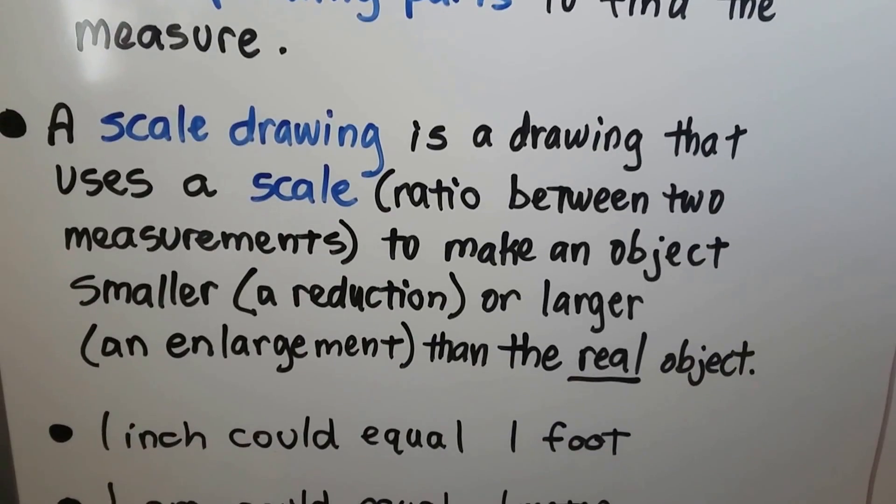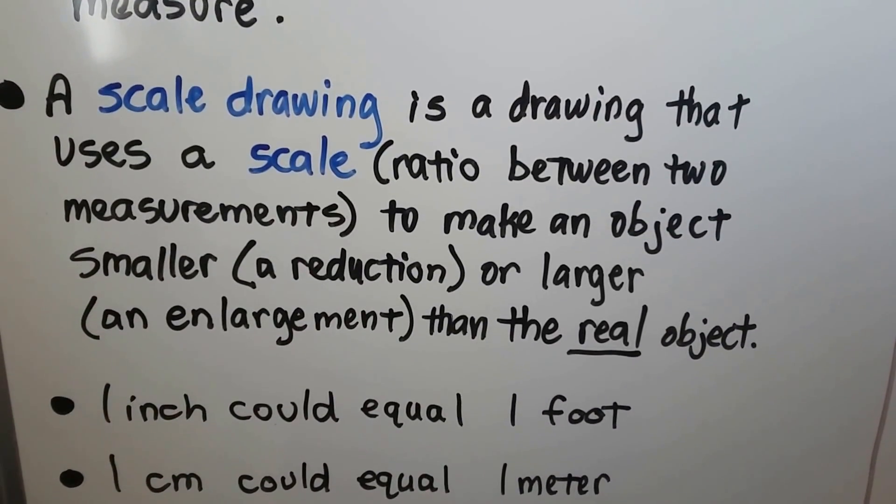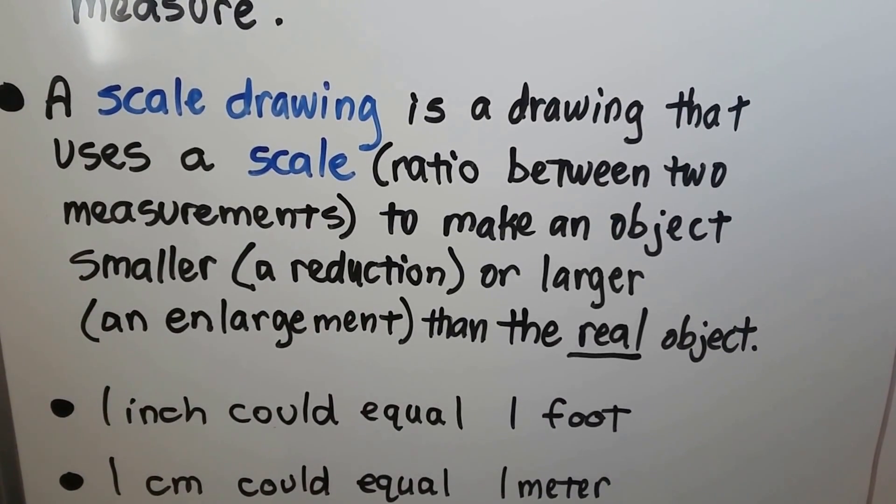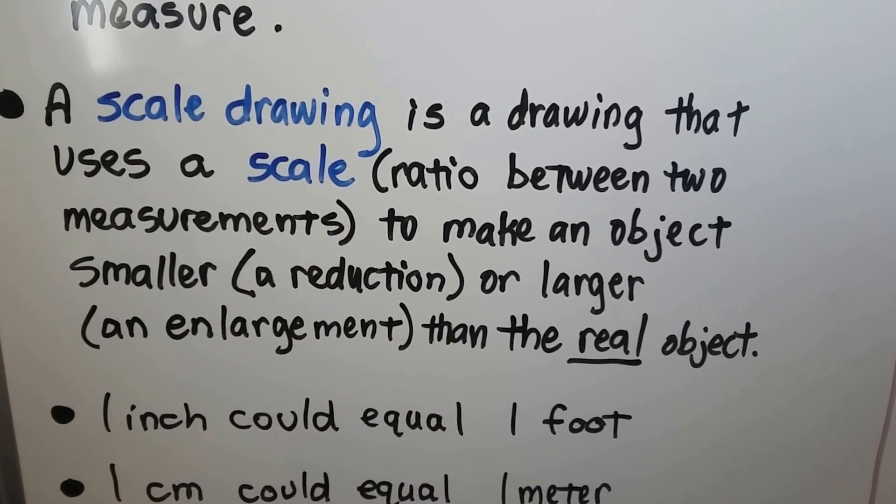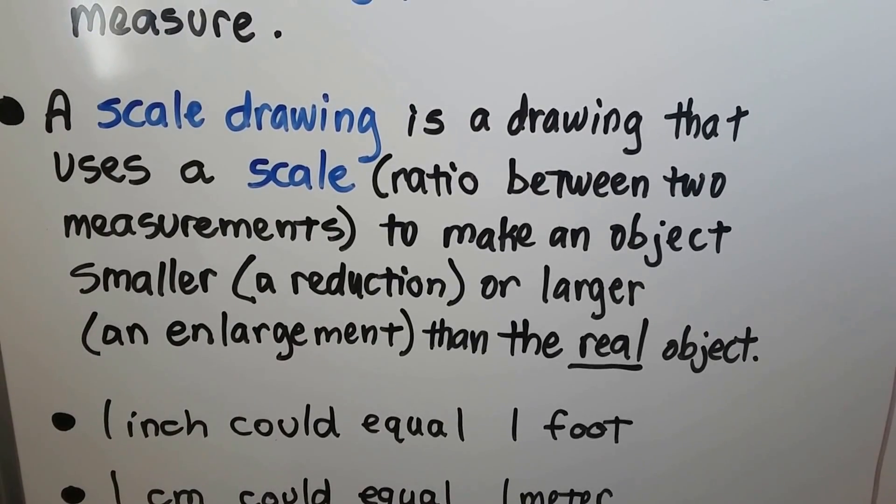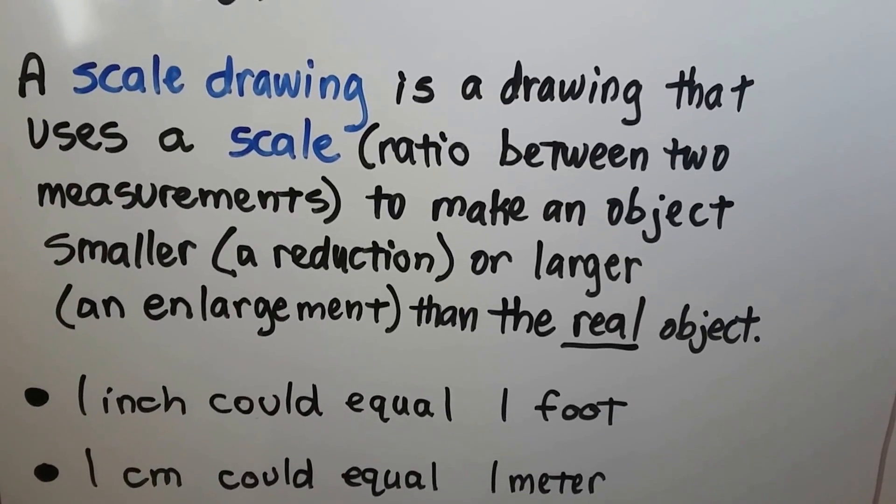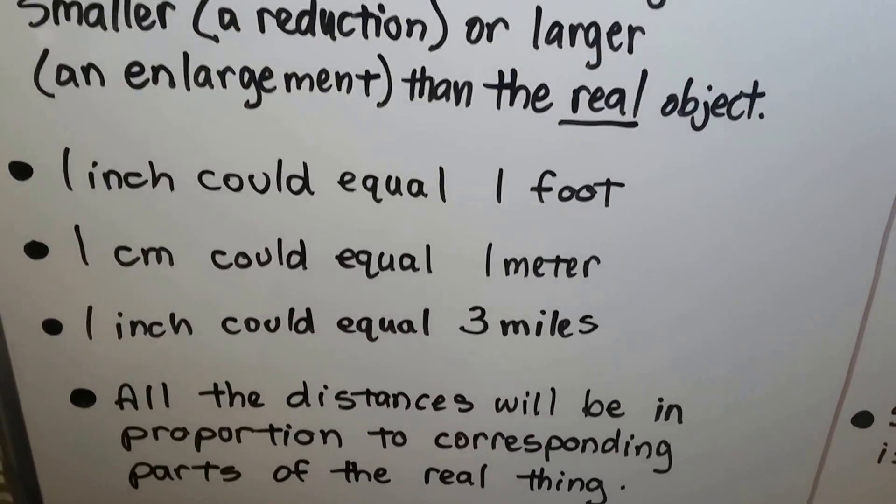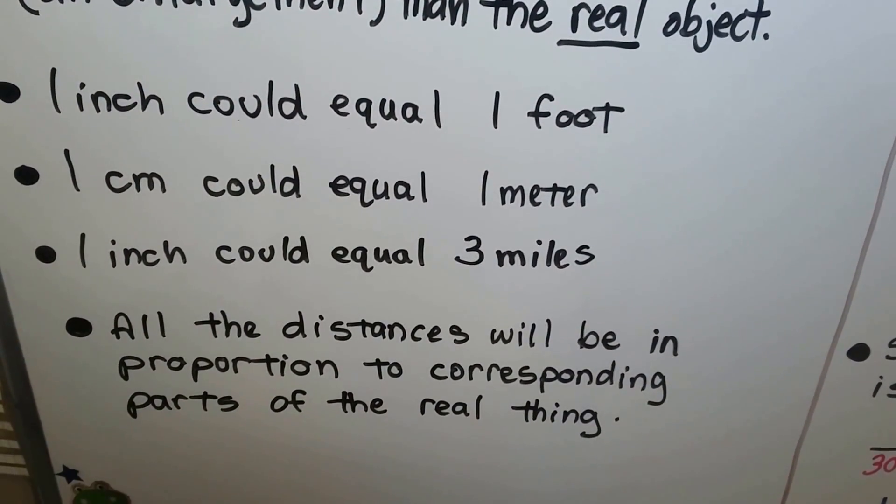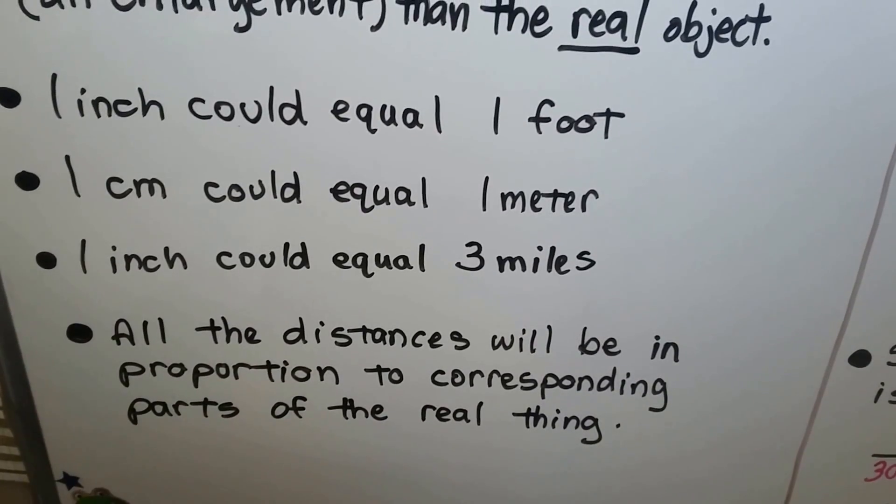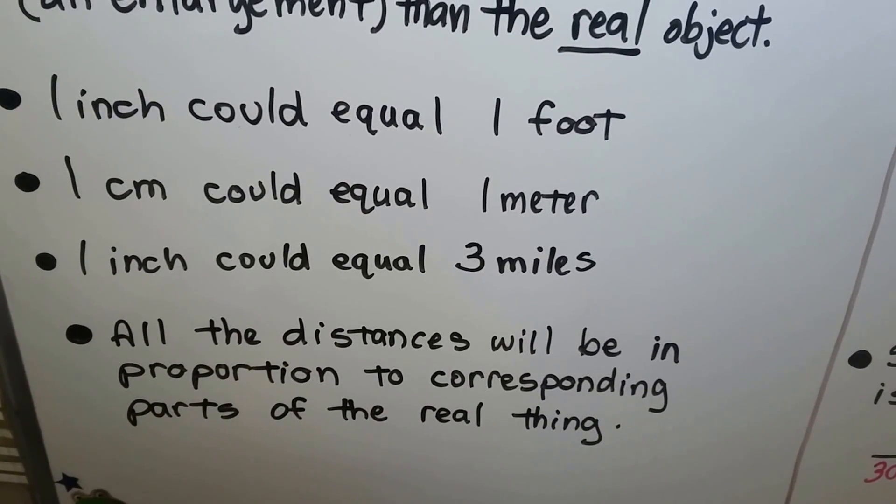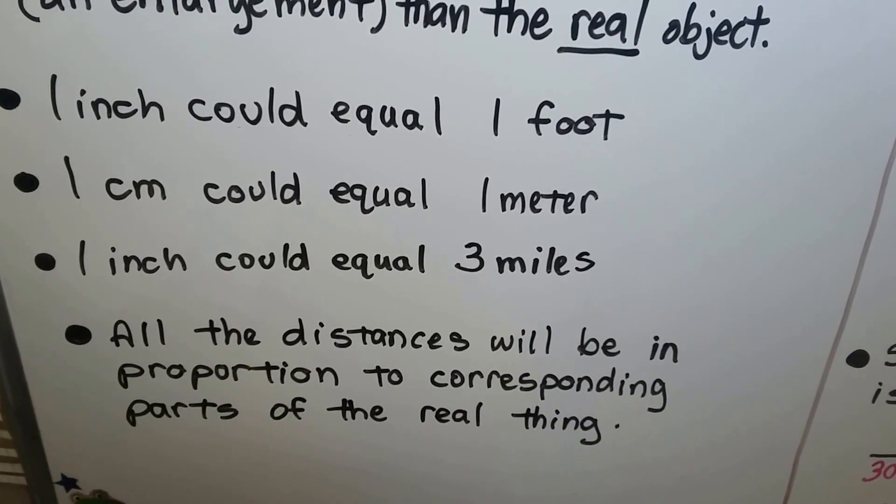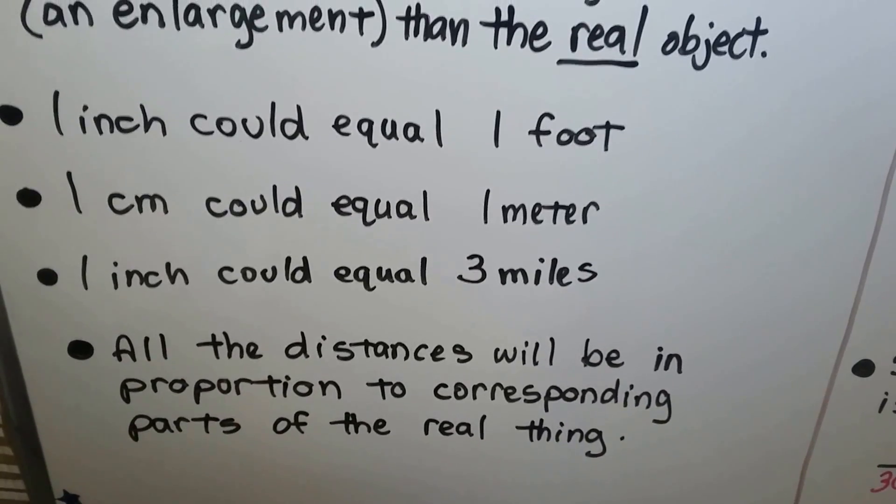A scale drawing is a drawing that uses a scale, that's a ratio between two measurements, to make an object smaller, which would be a reduction, or larger, that would be an enlargement, than the real object. So one inch could equal one foot, or one centimeter could equal one meter, or one inch could equal three miles, like on a map. And all the distances will be in proportion to corresponding parts of the real thing.